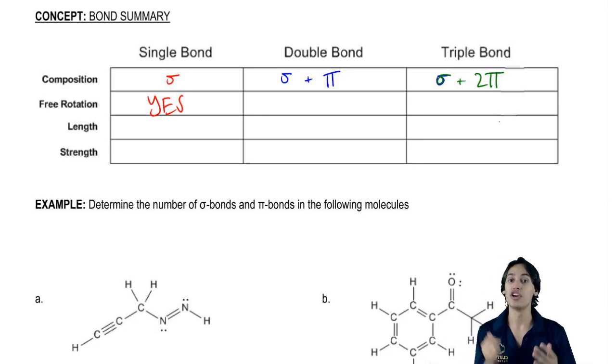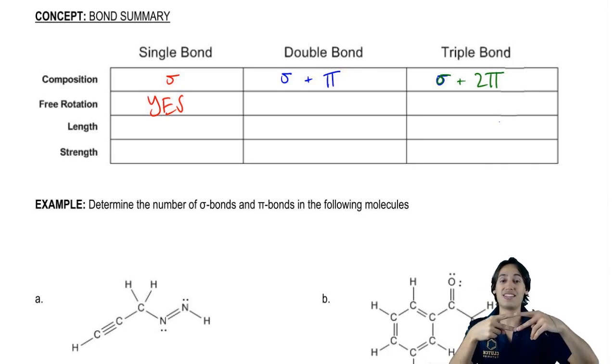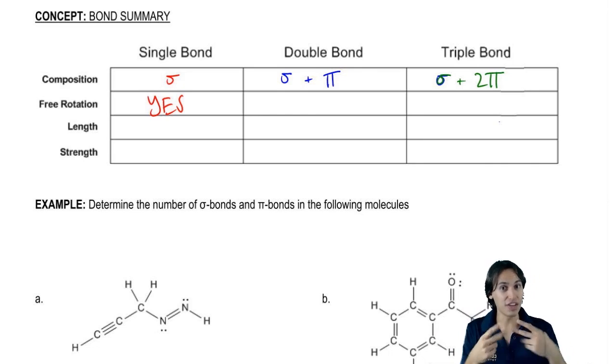The reason is because when you form bonds, that saves a ton of energy. So I'm going to have to spend a lot of energy in order to rotate and break this bond.